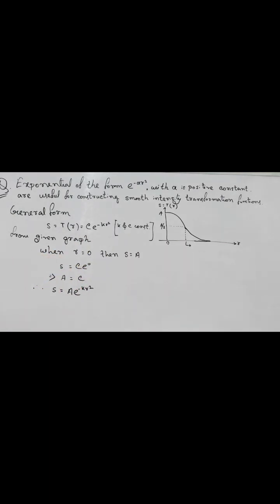Now, when R equals to L0, then S equals to A by 2. So we can put this equation: A by 2 equals to A into e to the power minus K L0 square. We put the value C here as A.